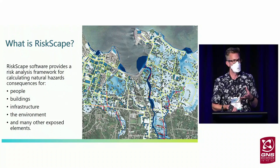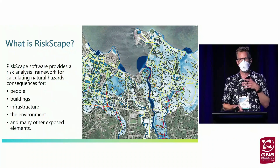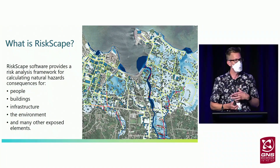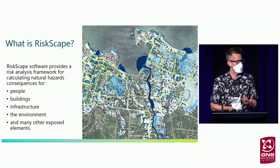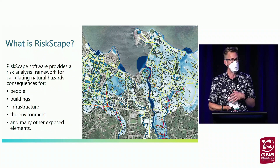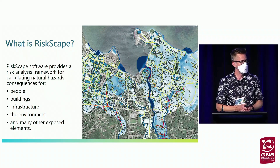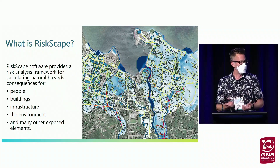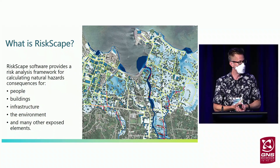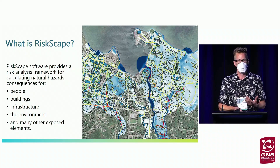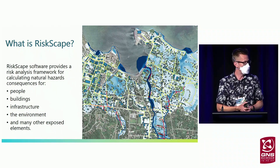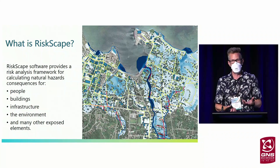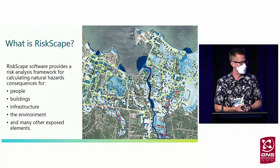RiskScape is the first tool we're going to talk about. RiskScape is software that provides a risk analysis framework for natural hazards. It can quantify the impact on our communities in terms of impact on people — so injuries and deaths — on buildings, the damage and financial cost of repairing those, on our infrastructure and how long it will take to become operational again and the repair cost, and also impact on the environment such as agriculture and horticulture.